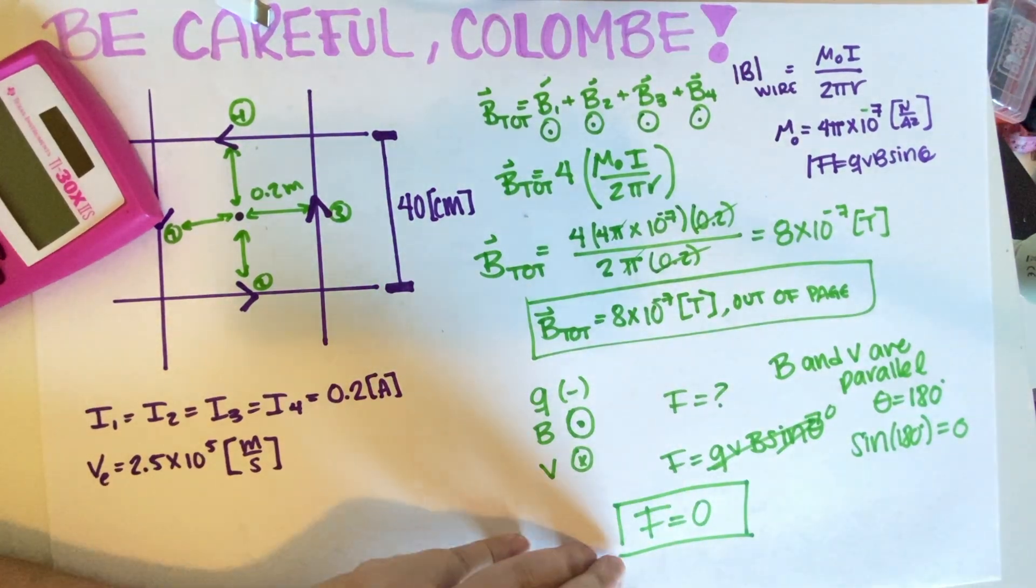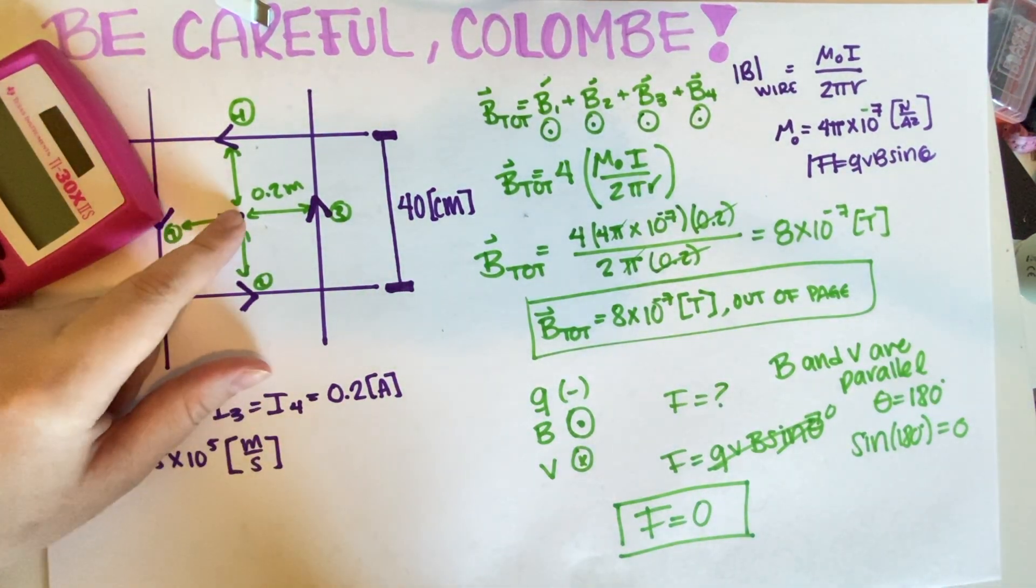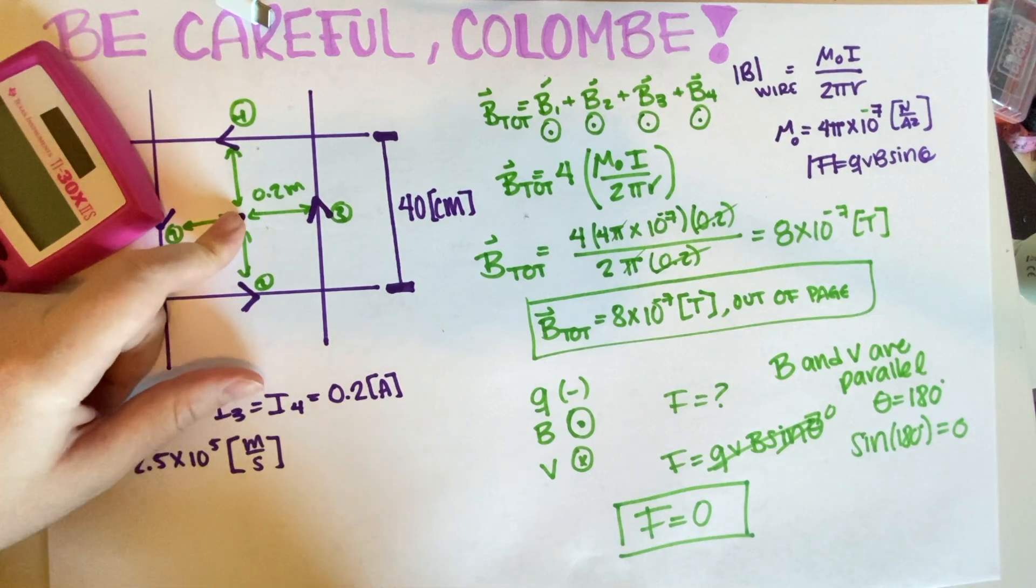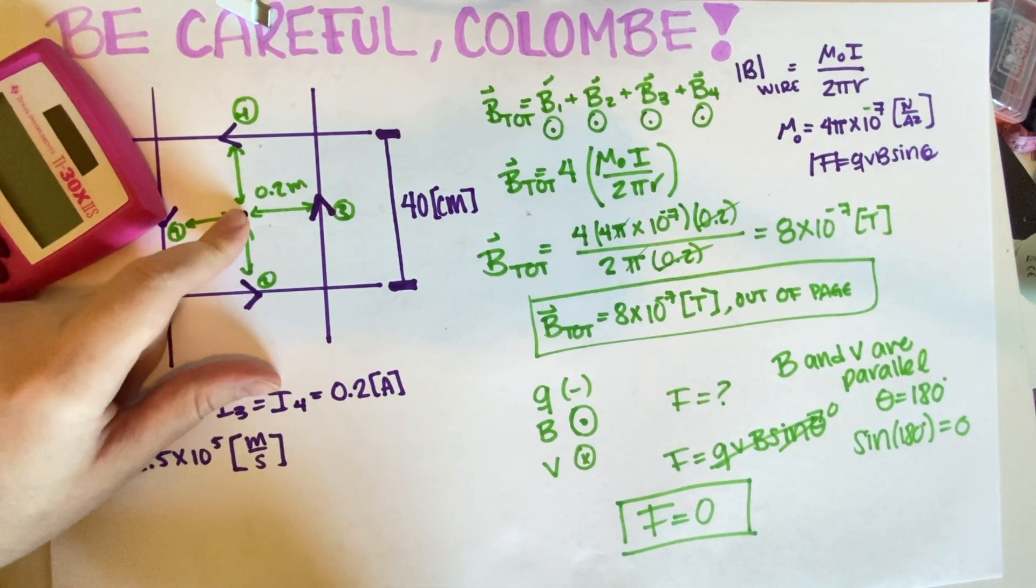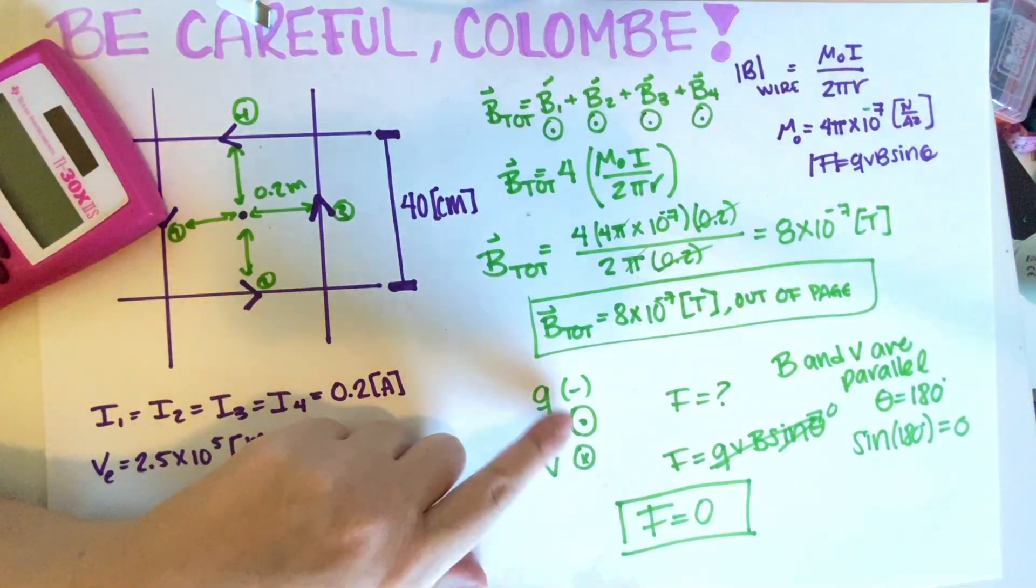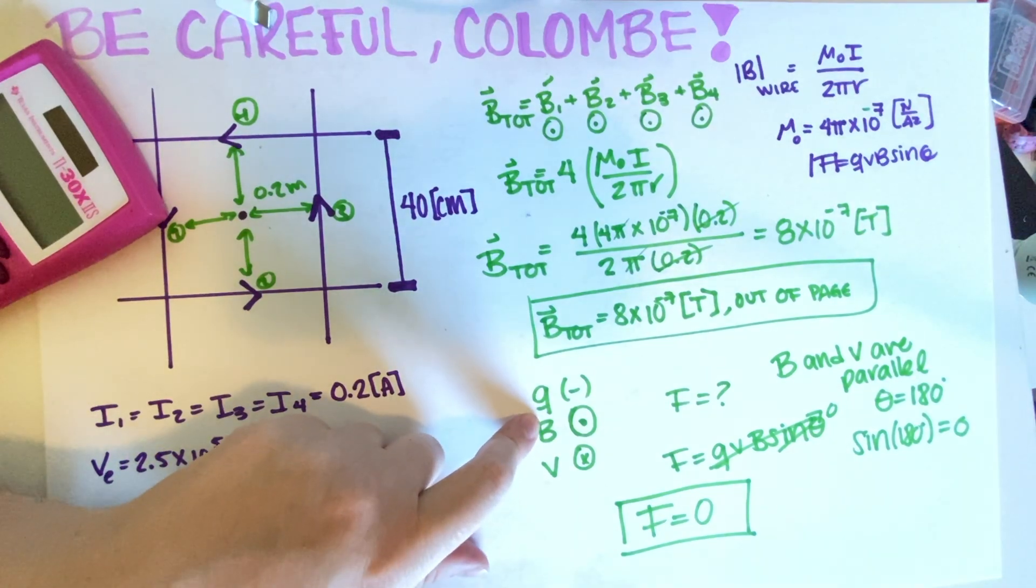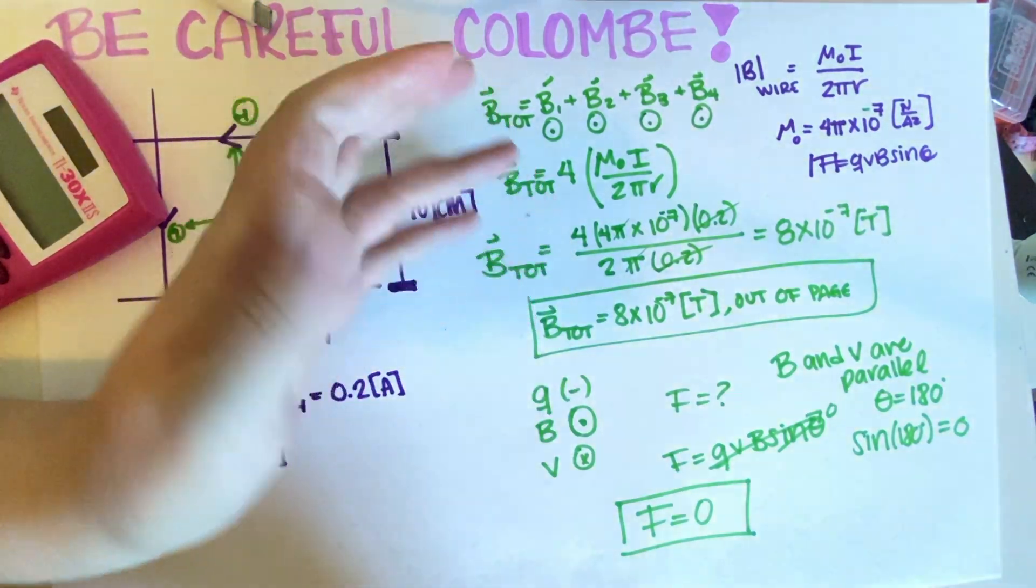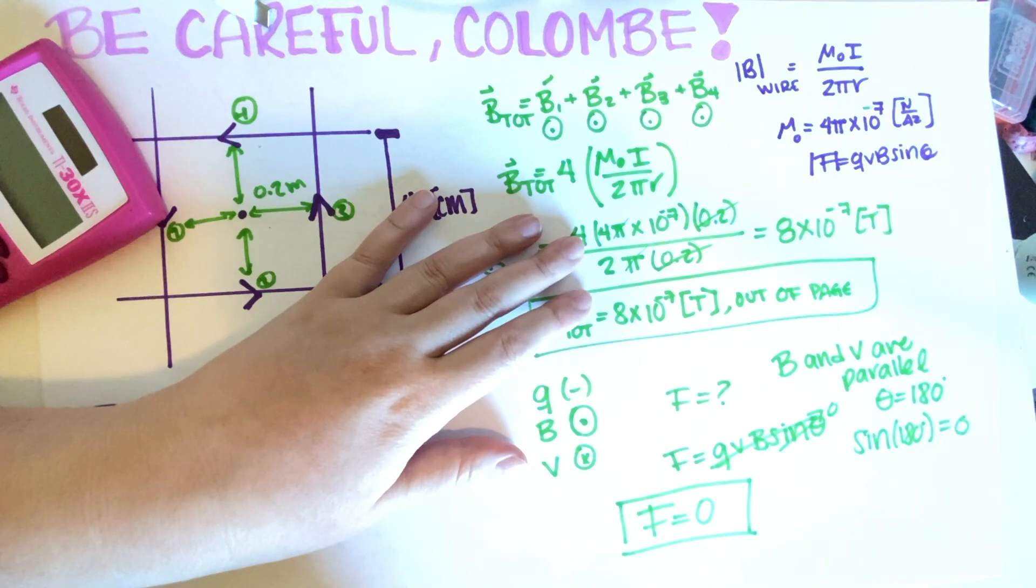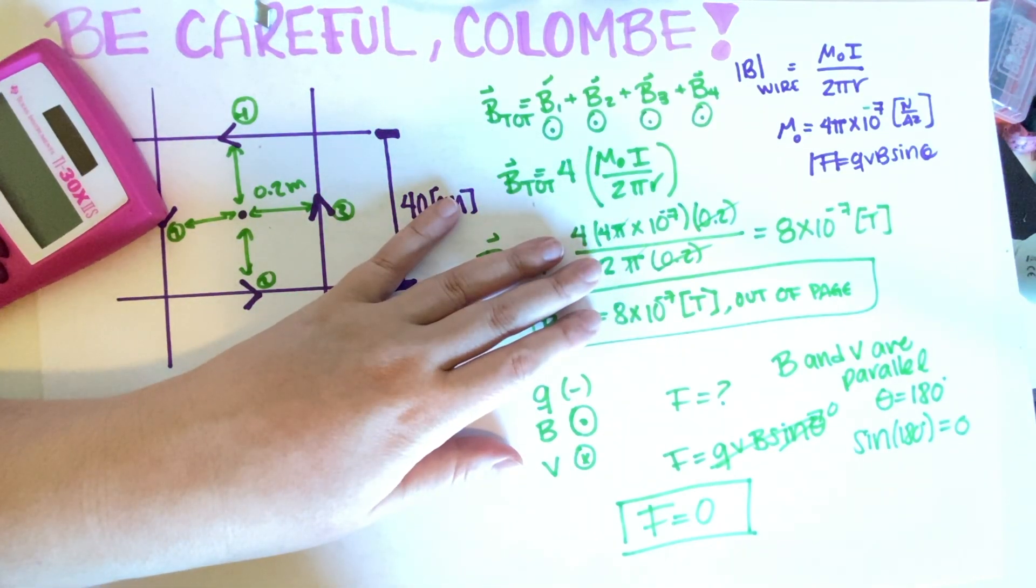So there is no magnetic force. This electron is not feeling any magnetic force because its velocity and the direction of the magnetic field are completely anti-parallel. So that basically just makes everything cancel out.